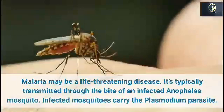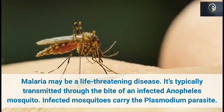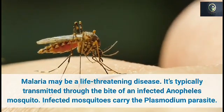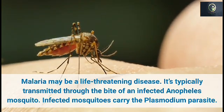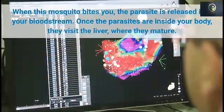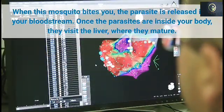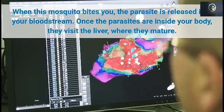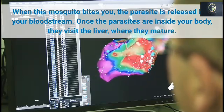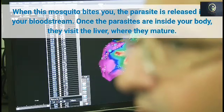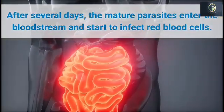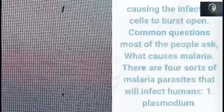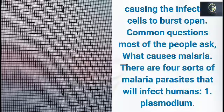What is malaria? Malaria may be a life-threatening disease. It's typically transmitted through the bite of an infected Anopheles mosquito. Infected mosquitoes carry the Plasmodium parasite. When this mosquito bites you, the parasite is released into your bloodstream. Once the parasites are inside your body, they visit the liver, where they mature. After several days, the mature parasites enter the bloodstream and start to infect red blood cells, causing the infected cells to burst open.